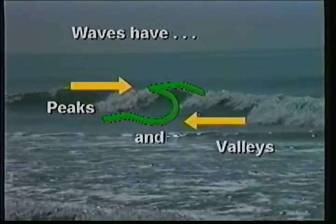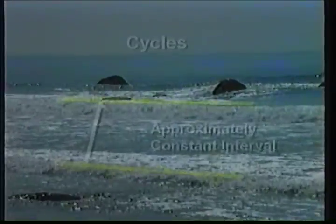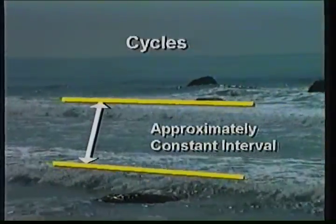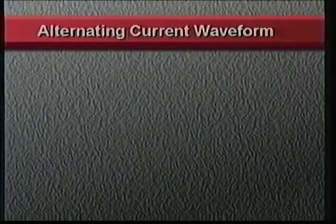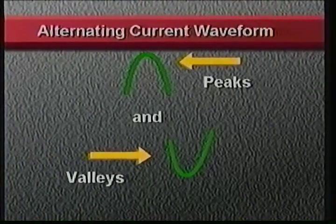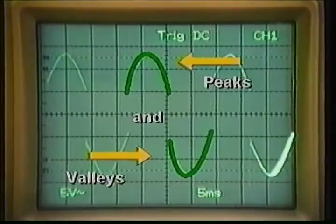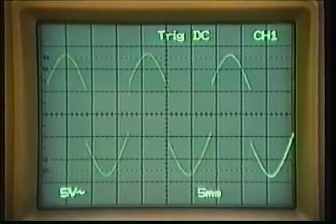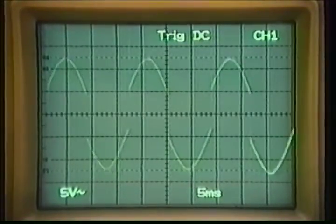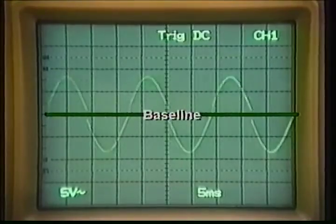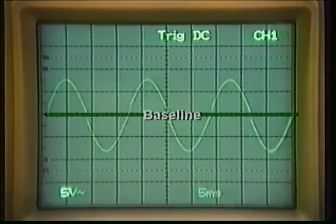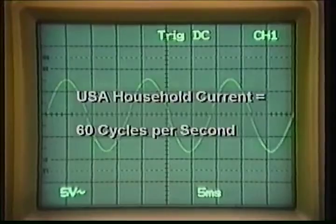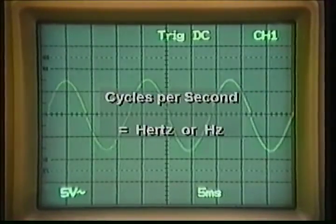Let's look at ocean waves breaking on a beach — the waves have peaks and valleys, and they hit the beach at fairly constant intervals we call cycles. Alternating current has a waveform with peaks and valleys too. We can display the alternating current waveform on an electrical device called an oscilloscope. Alternating current has very regular-looking waves with uniform peaks above and valleys below a baseline. Household current in the United States has 60 waves, or cycles per second, called hertz, abbreviated as Hz.